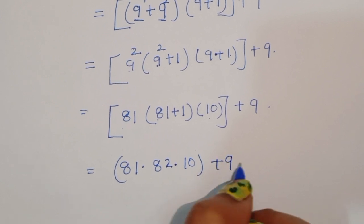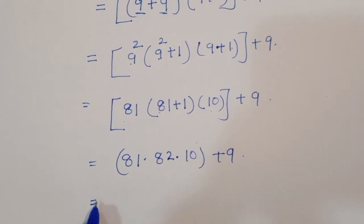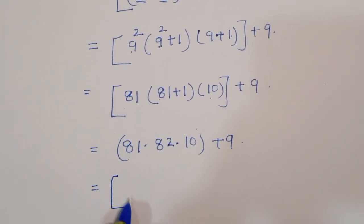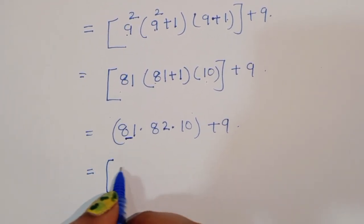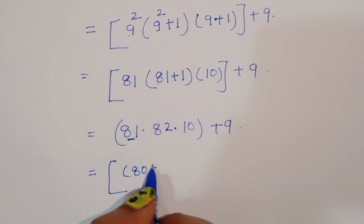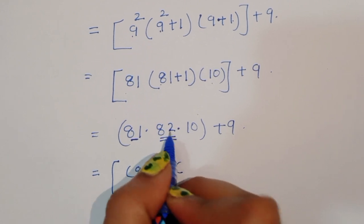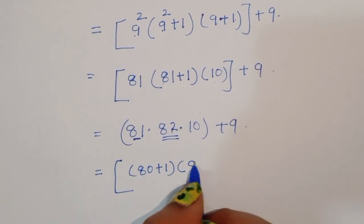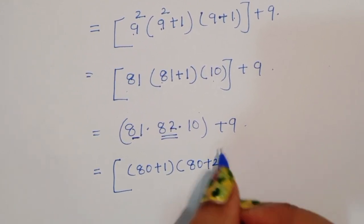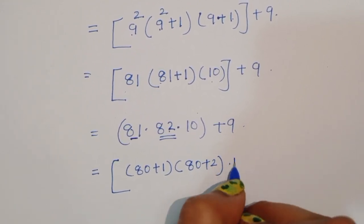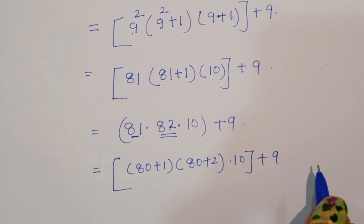Now 81 we can write as 80 plus 1, and 82 we can write as 80 plus 2. So the expression becomes (80 plus 1) times (80 plus 2) times 10 plus 9.